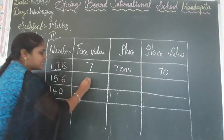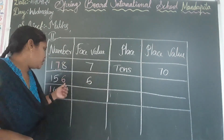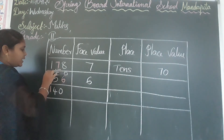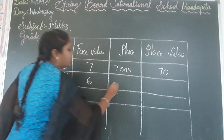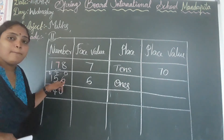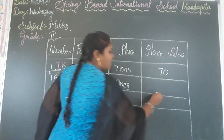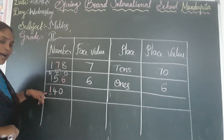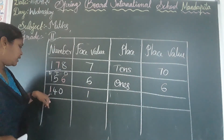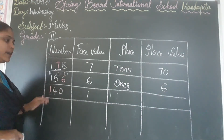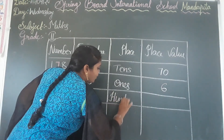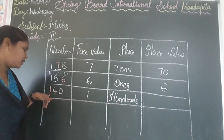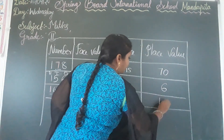Next: here 6. The face value of 6 is 6. Place: 6 is in the 1's place, so write '1's.' The place value of 6 is 6. Next: here 1. The face value of 1 is 1. Here 1 is in the 100's place, so write '100's.' The place value of 1 in the 100's place is 100.